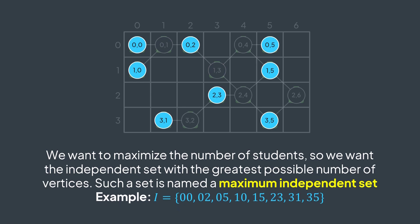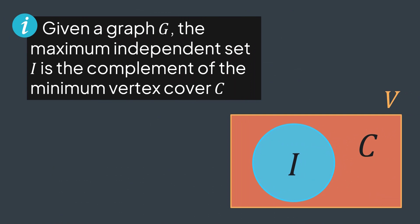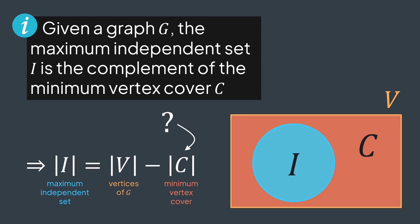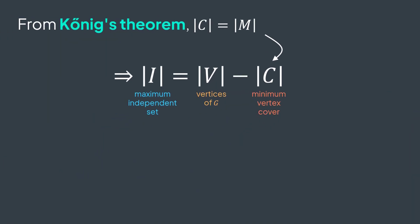We want to maximize the number of seats we use, so we want the maximum independent set — the independent set with the greatest possible size. In this example we can have a set of 8 independent vertices. And in graph theory, for any graph G, the maximum independent set I is the complement of the minimum vertex cover C. So we can just find the size of the minimum vertex cover of G and subtract it from the total number of vertices. But how to find the size of the minimum vertex cover of G? This is where König's theorem comes in: for any bipartite graph, the size of the minimum vertex cover equals the size of the maximum matching.